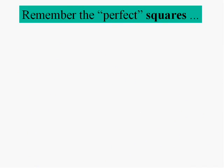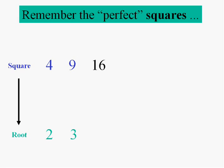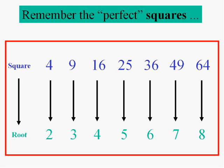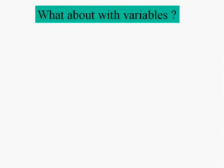Before I show you how to simplify radicals, there's some prerequisite information you need to know. Remember the perfect squares: the square root of 4 is 2, the square root of 9 is 3, the square root of 16 is 4, the square root of 25 is 5, the square root of 36 is 6, the square root of 49 is 7, the square root of 64 is 8. These are the perfect squares — good ones to get to know. You will be using them when you simplify radicals.